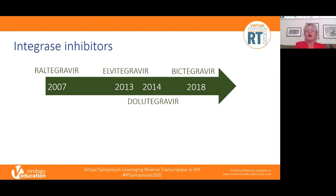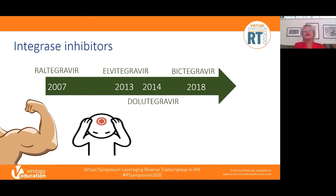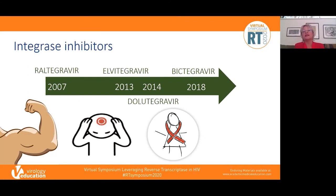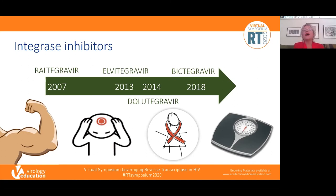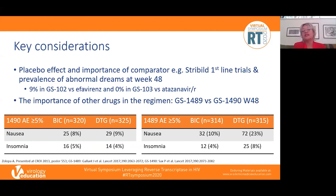Finally, integrase inhibitors: the timeline runs from raltegravir through to bictegravir over approximately 10 years. An initial toxicity associated primarily with raltegravir was myotoxicity — thankfully uncommon. CNS toxicity has been an issue, particularly implicated with dolutegravir, though in cohorts it was especially associated with abacavir co-use. The pregnancy safety signal for dolutegravir is reassuringly no longer a significant difference, though numerically a small increased risk of neural tube defects remains for women exposed at conception.